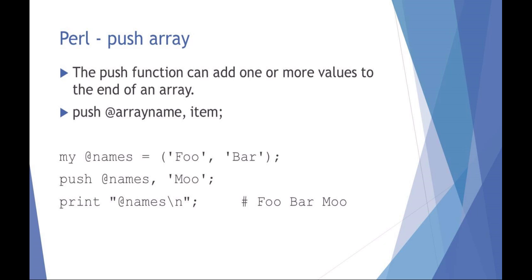Pushing an array is a way to add a value onto an array. You can say 'push array name' and then the item. In this example, I've got an array of names with foo and bar, and I want to add the name moo, so I push onto the array name moo, and my new array is now foo, bar, and moo.